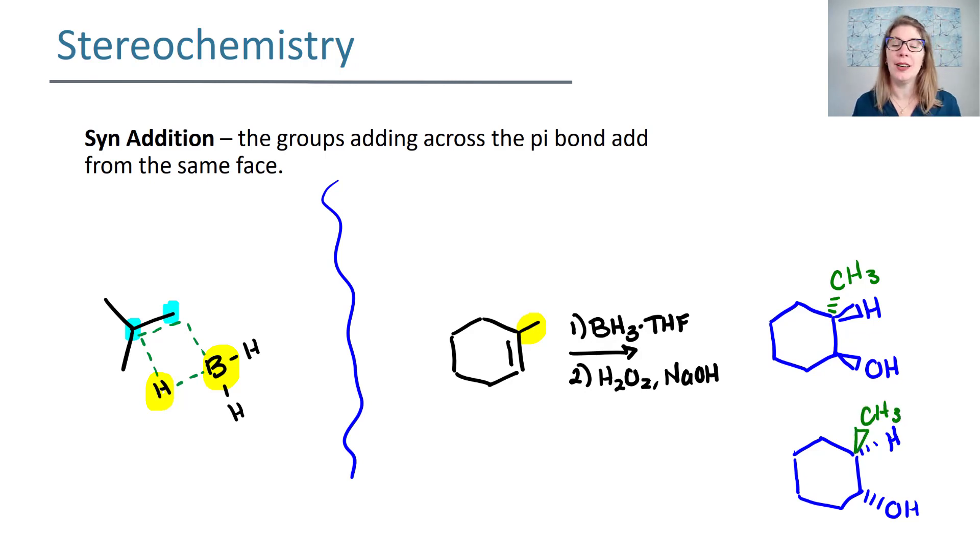So now we're expecting a pair of enantiomers. Both of these products will form in a 50-50 mixture. Remember that that 50-50 mixture is called a racemic mixture when you have a 50-50 mixture of enantiomers. So for your stereochemistry, you're expecting syn addition, but the syn addition really only plays out when you're forming chirality centers at the end. If you didn't have a chiral center form, then you can't really show syn addition very well.